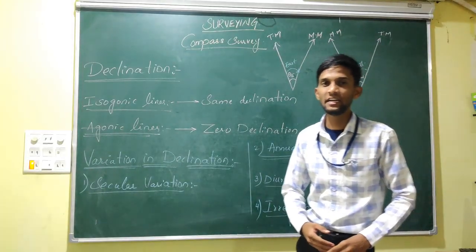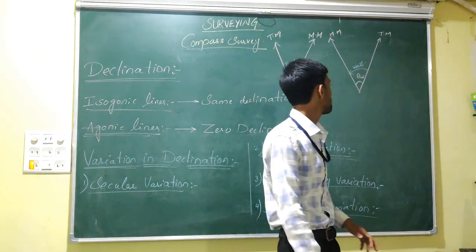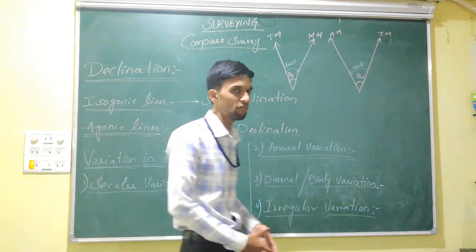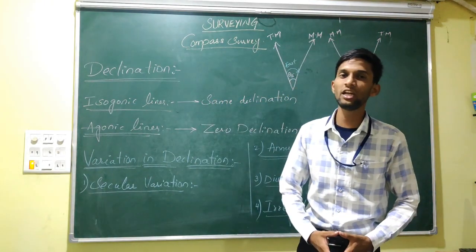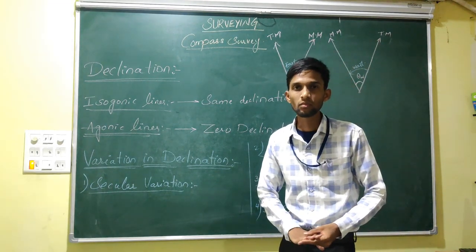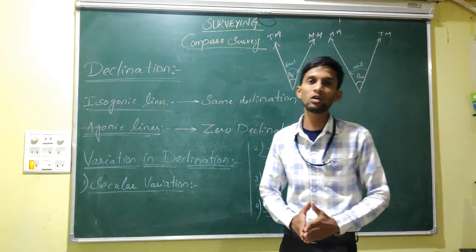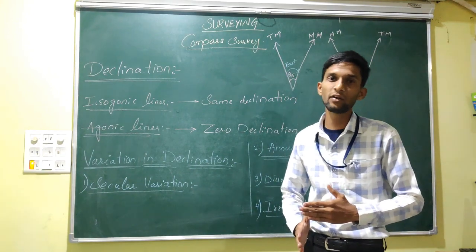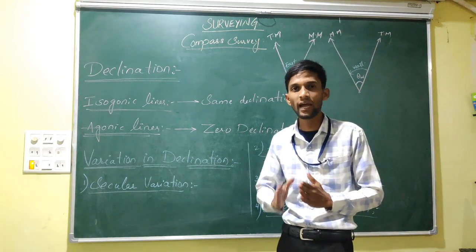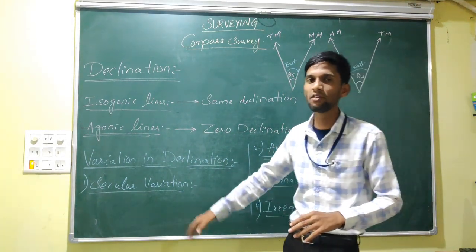There are variations in declination. What are the variations? Secular variations, annual variations, diurnal variations, and irregular variations. What is secular variation? The magnetic needle acts like a pendulum — it swings in one direction for a long term of 100 to 150 years, then comes to rest and deflects in the other direction. This is called secular variation.